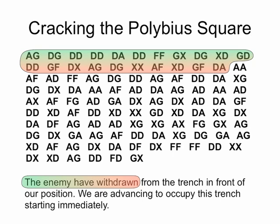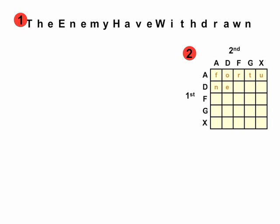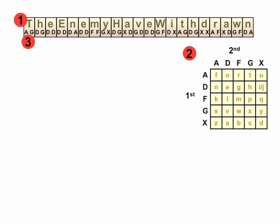You're on the German side — a Morse code operator — and you want to encipher the message 'the enemy have withdrawn.' You write out that message first, then use the Polybius square with the code word Fortune, completing the Polybius square the same as before. Now we're going to do the same enciphering we've just done for 'the enemy have withdrawn' — that's the Polybius square encipher. But now we're going to continue and do more enciphering on top of that.